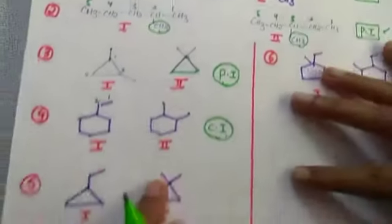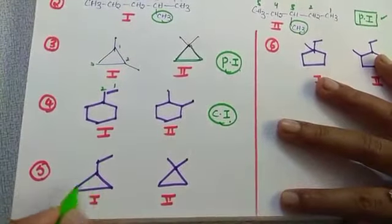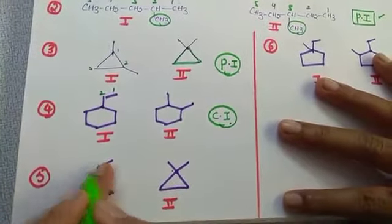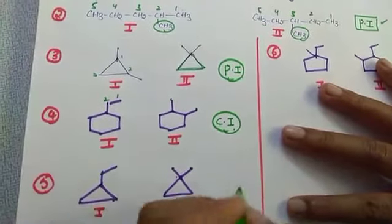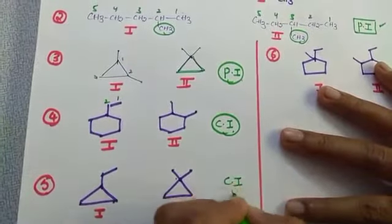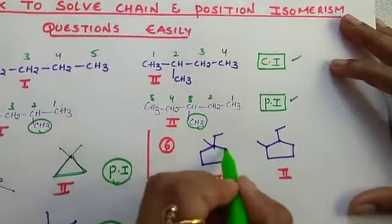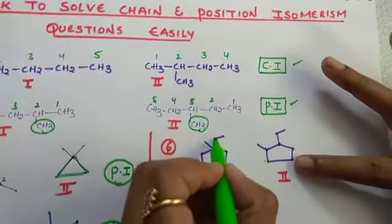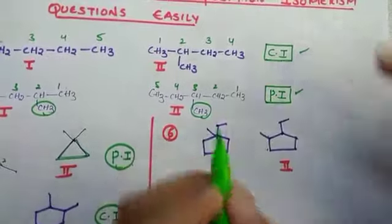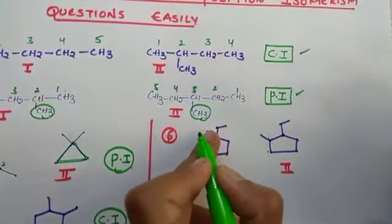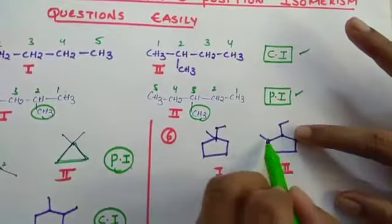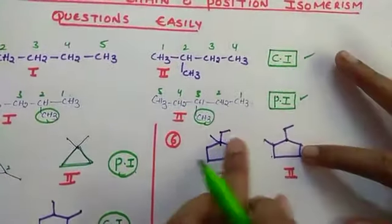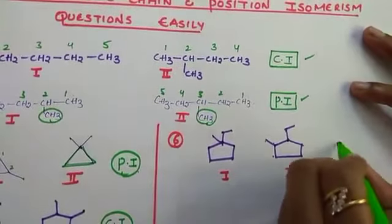For chain isomers, either the parent chain or side chain must be different. In the next pair, both have the same number of carbons in the parent chain, but side chain counts differ — one has 2 carbons and the other has 1 — so those are chain isomers. In the following pair, both have parent chains of 5 carbons. One has a side chain of 2 carbons and the other has 1 carbon. Both have the same parent chain and same side chain but different positions, so those two are position isomers.